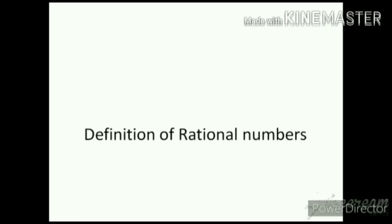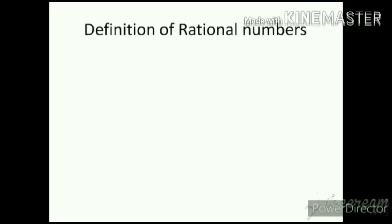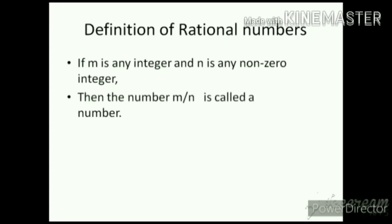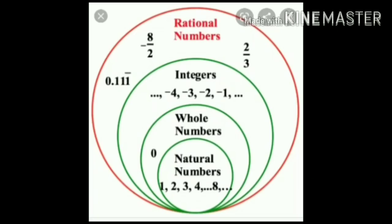Here is the definition of rational numbers from your 8th standard textbook: if M is any integer and N is any non-zero integer, then the number M upon N is called a rational number. In this diagram, it is clearly mentioned what are the rational numbers. Rational numbers include natural numbers, whole numbers, integers, fractions, and decimal form of recurring — all these come under rational numbers.